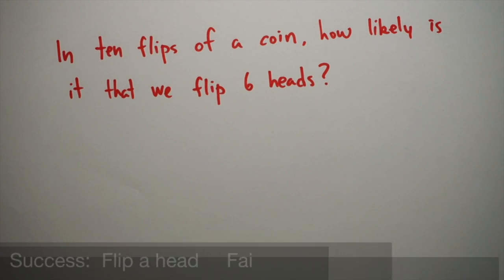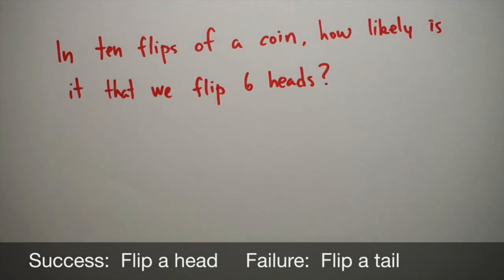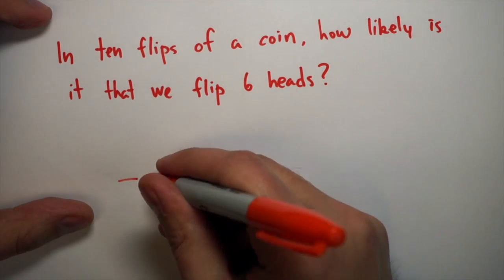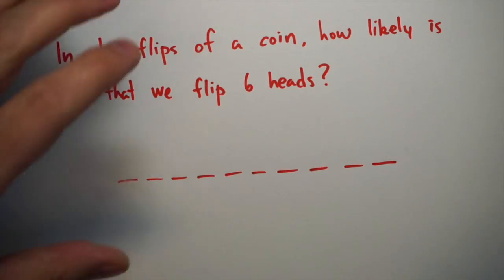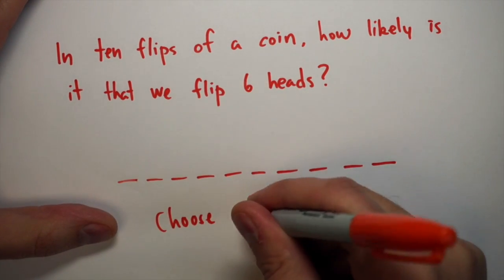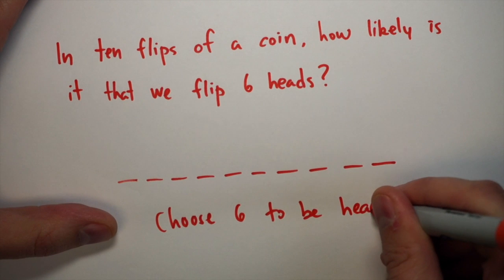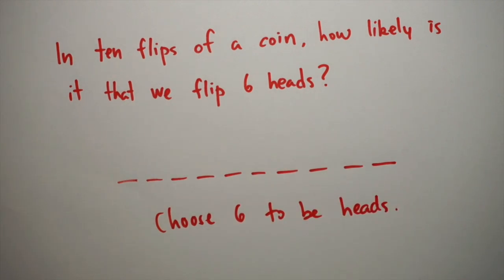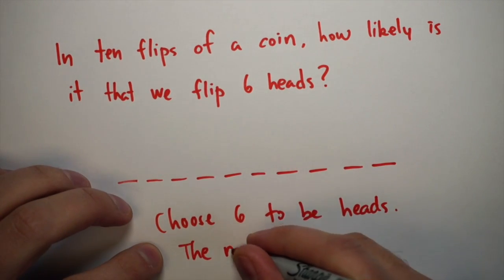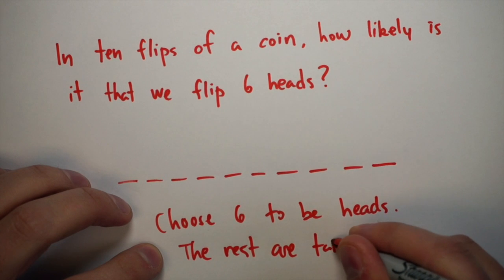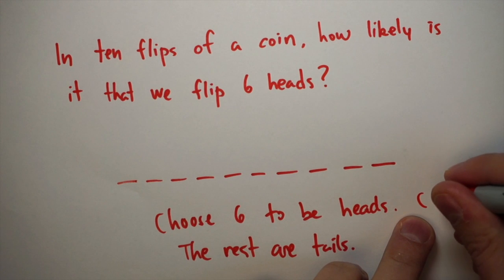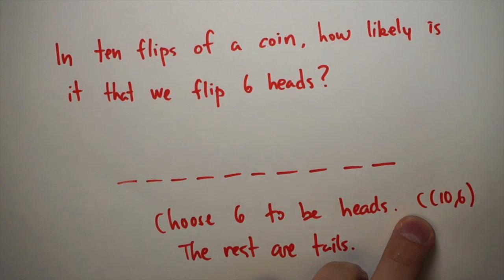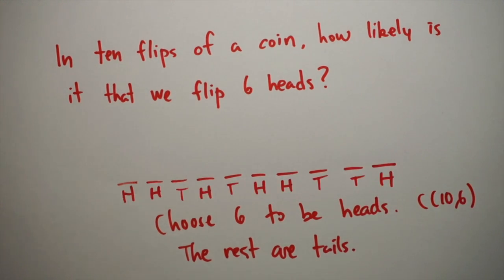Let's look at an example: in 10 flips of a coin, how likely is it that we flip six heads? Our success will be flipping a head and failure will be flipping a tail. In our 10 coin flips we need six of them to be heads, so we're going to choose six out of the ten to be heads and the rest will be tails. With ten slots, there are C(10,6) — or ten choose six — ways of doing this.